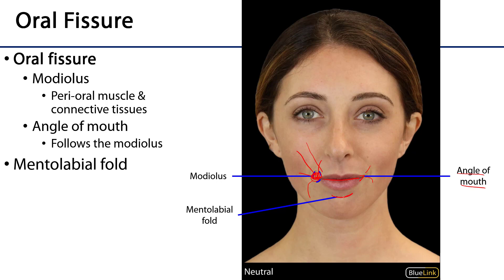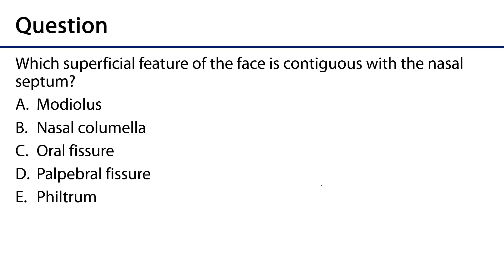All of the muscles interdigitating on that modiolus are going to control the direction of the angle of the mouth — whichever way the modiolus is pulled by the perioral muscles, the angle of the mouth will follow. Between the lower lip and the mental or chin region is the mentolabial fold. So: eyes, nose, mouth — palpebral fissures, nares, oral fissure.